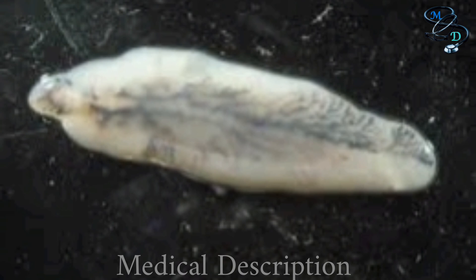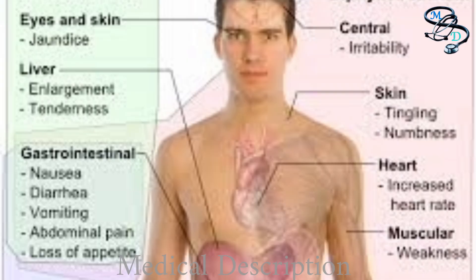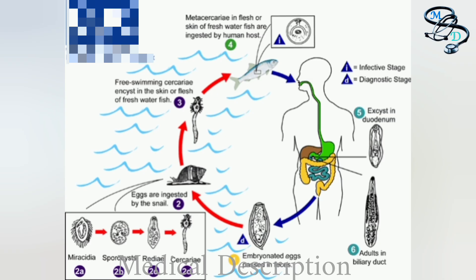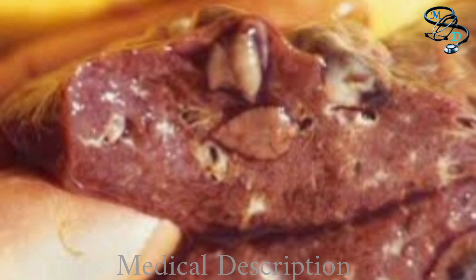Most infected persons do not show symptoms. Infections that last a long time can result in severe symptoms and serious illnesses. Untreated infections may persist for up to 25 to 30 years. Typical symptoms include indigestion, abdominal pain, diarrhea, or constipation. In severe cases, abdominal pain, nausea, and diarrhea can occur. Some infections can also present with fever, facial swelling, swollen lymph nodes, sore joints, and rash. Chronic infections may also involve the pancreatic ducts.